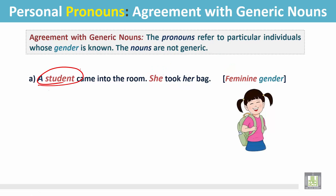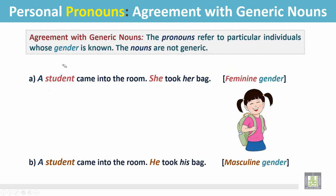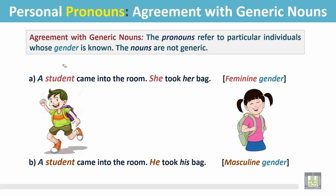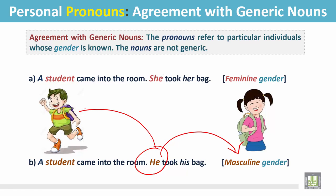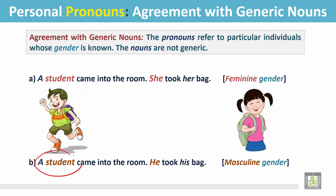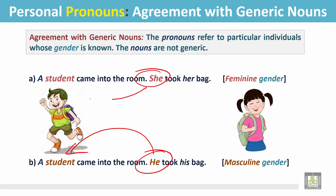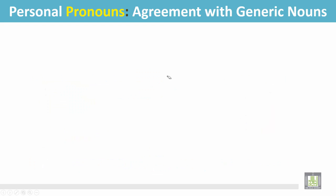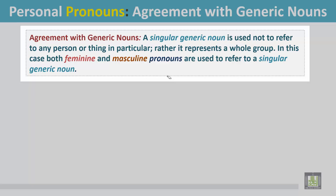Example B: 'A student came into the room. He took his bag.' In this sentence, the pronoun is referring to a masculine gender, but the noun itself is not generic. In both sentences, the pronouns are referring to a noun which is not generic.